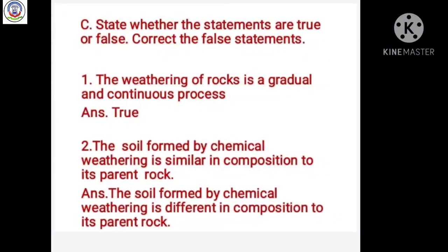Question number C: State whether the statements are true or false. Correct the false statements. Number 1: The weathering of rocks is a gradual and continuous process. Answer is true. Number 2: The soil formed by chemical weathering is similar in composition to its parent rock. Answer is false.